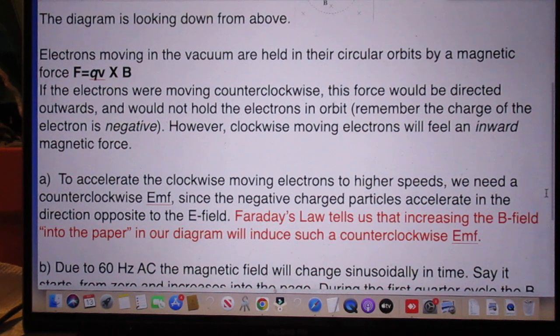Electrons moving in the vacuum are held in their circular orbits by a magnetic force F equals Q, which is the charge of the electron which is negative, times V cross B. V is the velocity which is a vector and B is also a vector which is the magnetic field, and it is the cross product of V cross B.